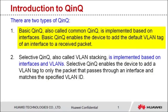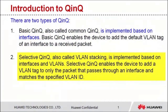Basic QNQ enables the device to add the default VLAN tag of an interface to a received packet. Selective QNQ, also called VLAN stacking, is implemented based on VLAN IDs and interfaces. That is, the device only adds a VLAN tag to the packet that passes through an interface and matches the specified VLAN ID.